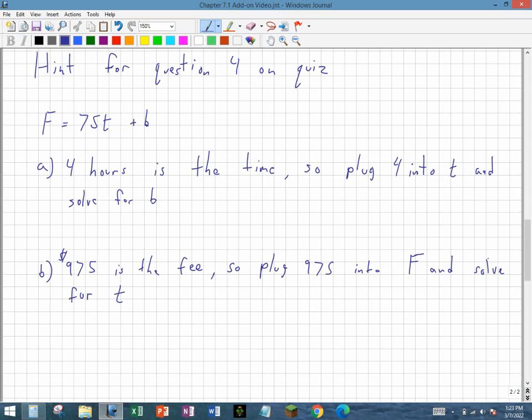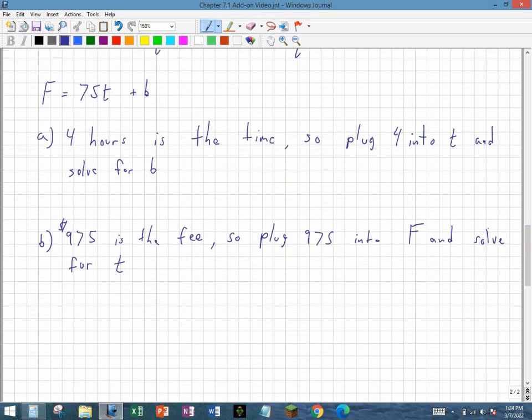So you'll be given an equation, f equals 75t plus b. And the value of t is in time, and the value for f is in money. It's a money value. It's a fee. So part a says, in four hours of time, suppose a decorator spends four hours of time, and charges the client $450. So determine the parameter value for b.